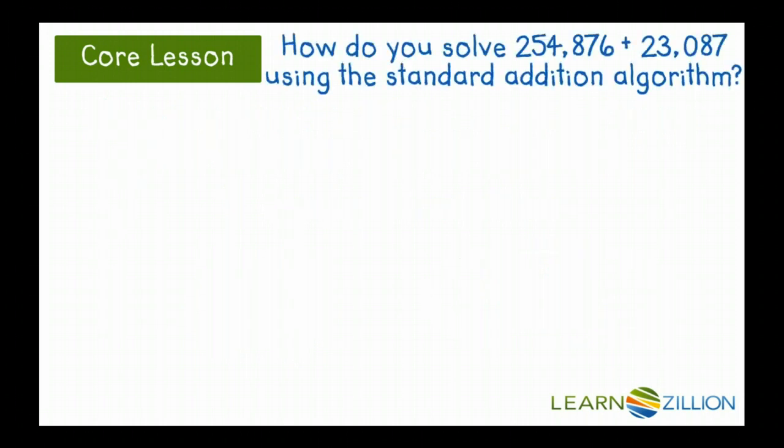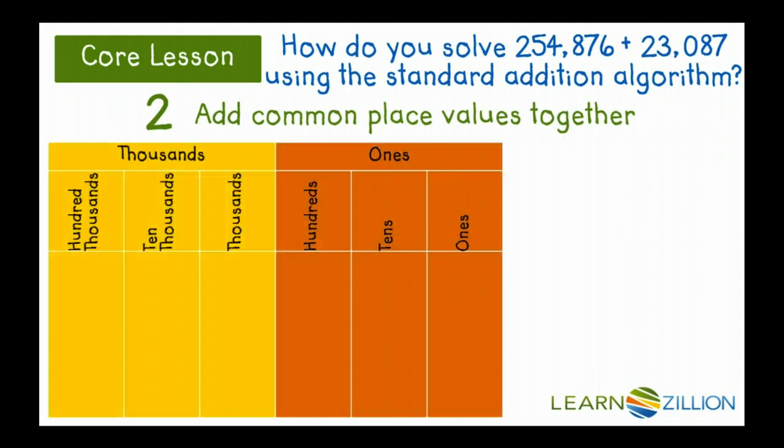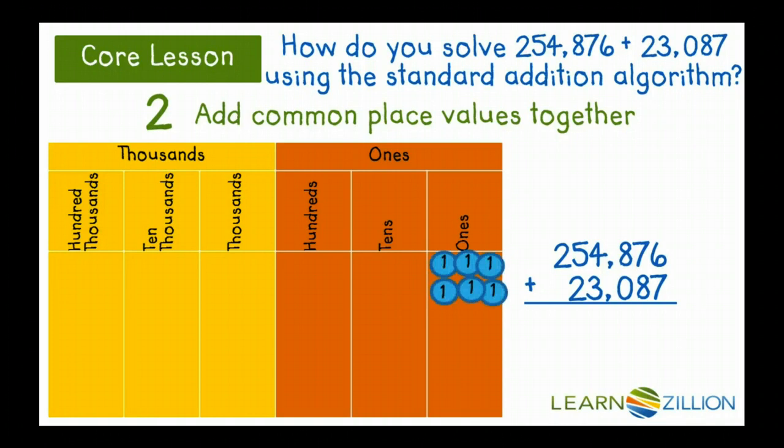We're going to solve this addition problem by adding the common place values together. And we're going to use a place value chart to help us visualize what's actually happening when we're adding these numbers together. So 254,876 plus 23,087. So when I start with my very first number, I have six ones plus seven ones.